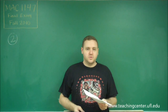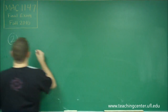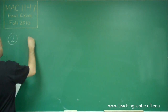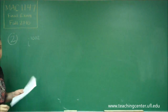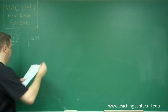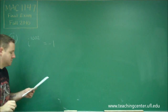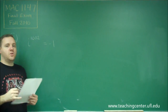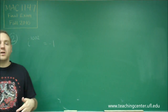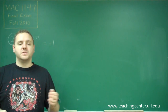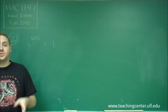For number two, we have another true-false question. We're asked if i to the 1002 power is equal to negative one. Remember for i, every power that's a multiple of four would cancel out to just be one.